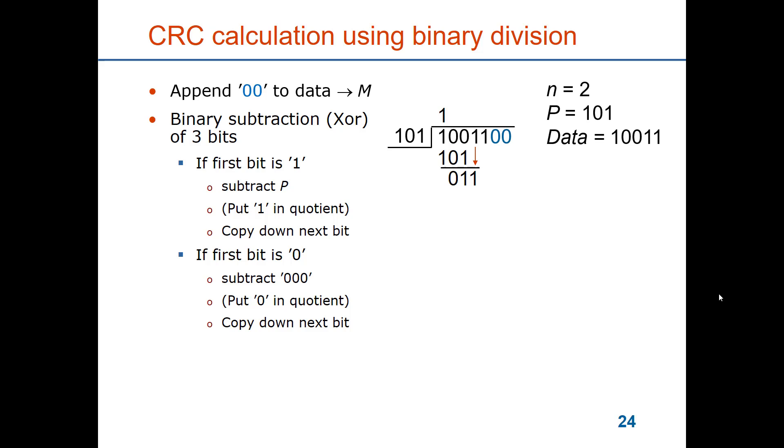Now we have the first bit being zero. So we put a zero in the quotient and we subtract or take exclusive or of 011 with 000. The first bit again has been used so we have one exclusive or zero in two cases, which means one and one.